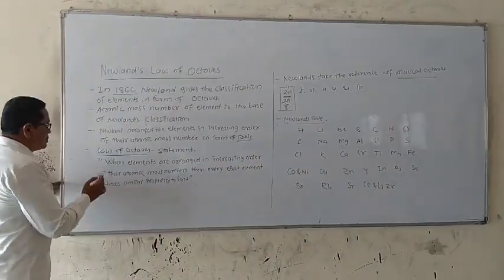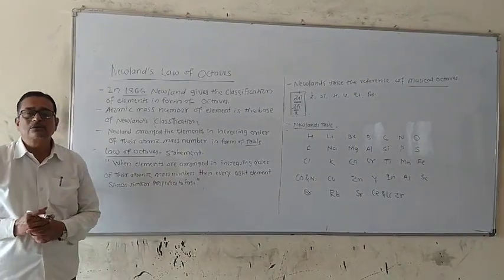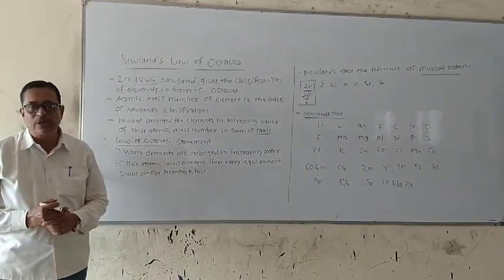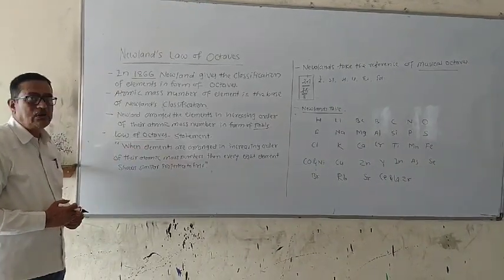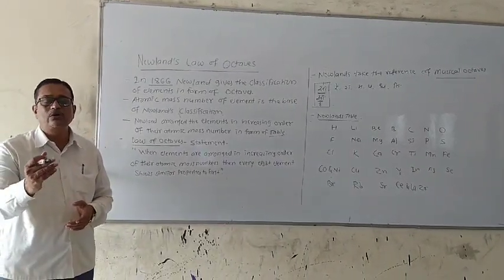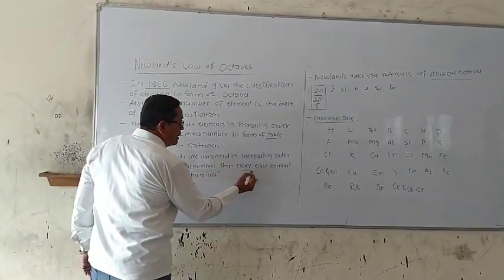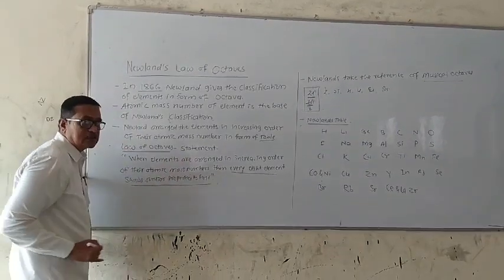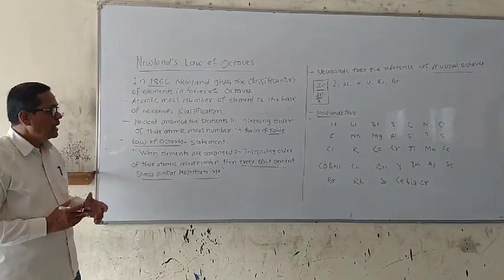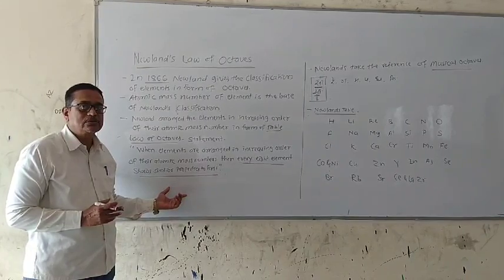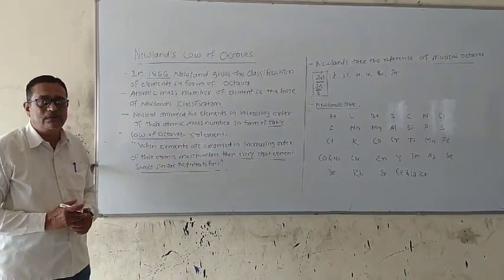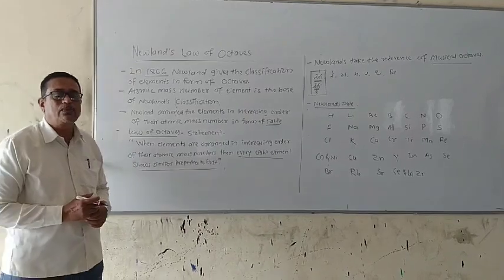That law is called the Law of Octaves. According to Newlands, when elements are aligned in increasing order of their atomic mass number, then every eighth element shows similar properties to the first element. When elements are arranged in increasing order of their atomic mass number, every eighth element shows similar properties.